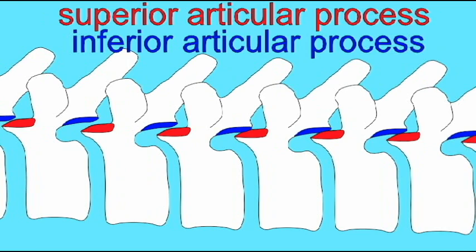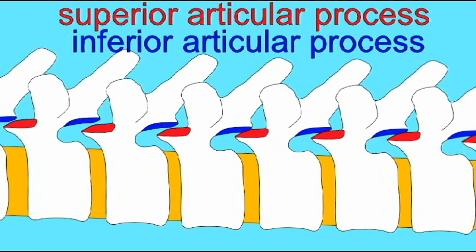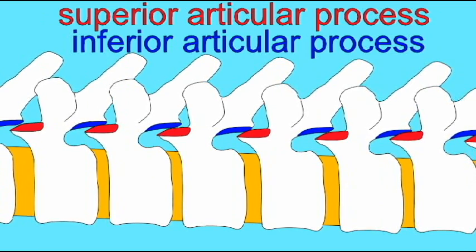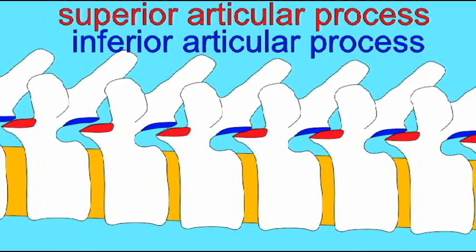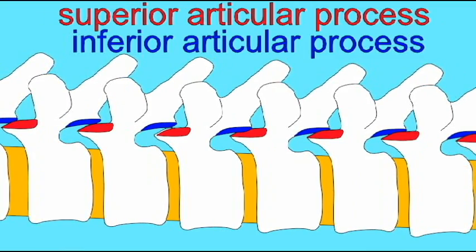And so the movement between the superior and inferior articular processes of neighboring vertebrae allows for much of the movement of the vertebral column.